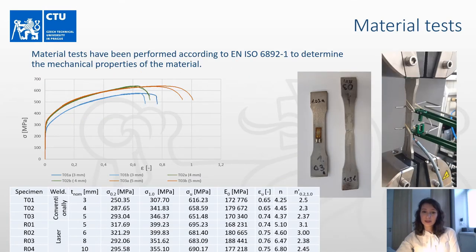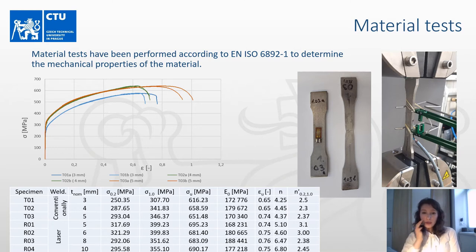Material tests were performed to determine the mechanical properties of the material. For each tensile test, two strain gauges were used for a more accurate initial phase of the stress-strain curve to determine the modulus of elasticity. The material properties are summarized in the table.